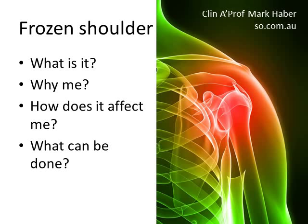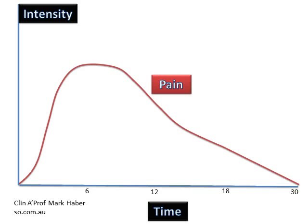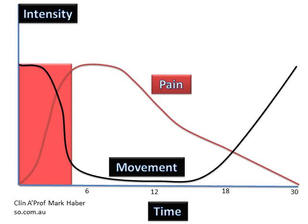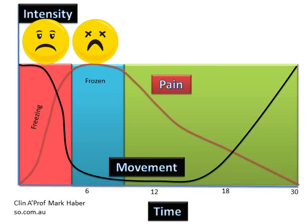Your next question is: how does a frozen shoulder affect me? Typically, there is a gradual onset of pain which appears to worsen over six months. As the pain becomes more severe, the movement deteriorates. With worsening pain and reducing movement, we call this the freezing phase of a frozen shoulder, and it is a time of much concern. At its worst, with severe pain and restricted movement, we call this the frozen phase. When things start to resolve, we call this the thawing phase.